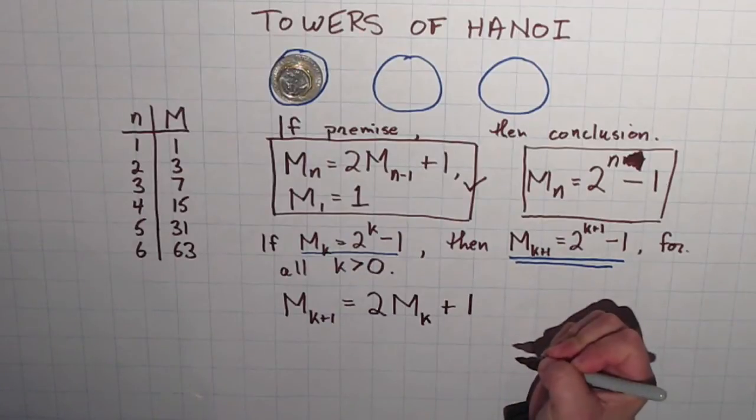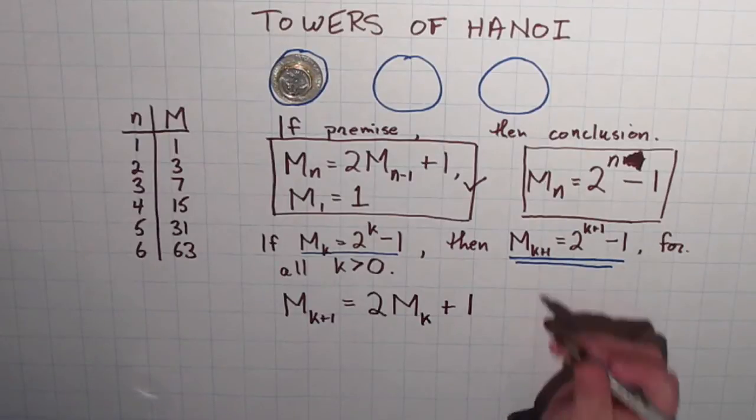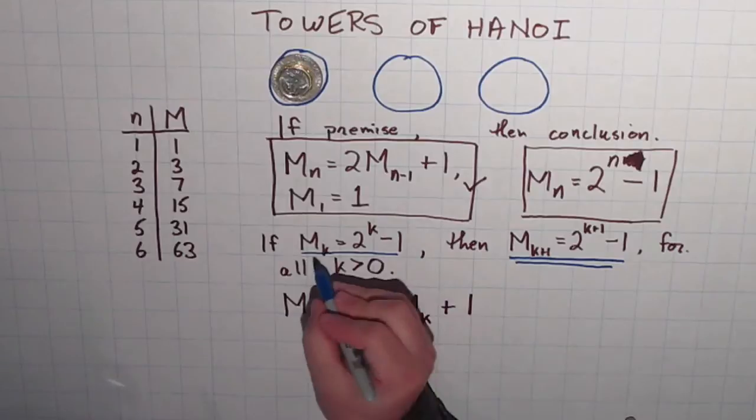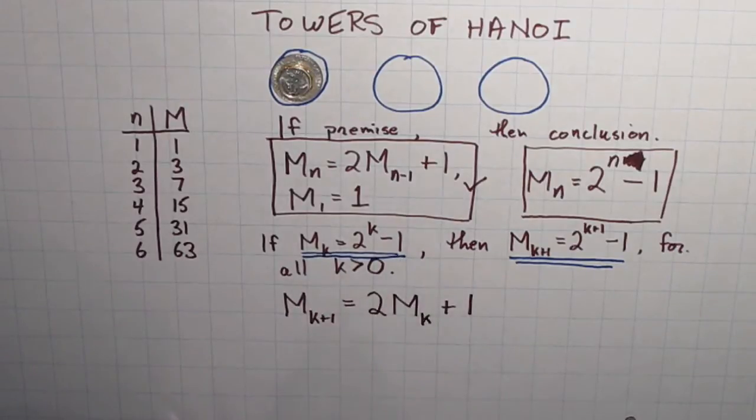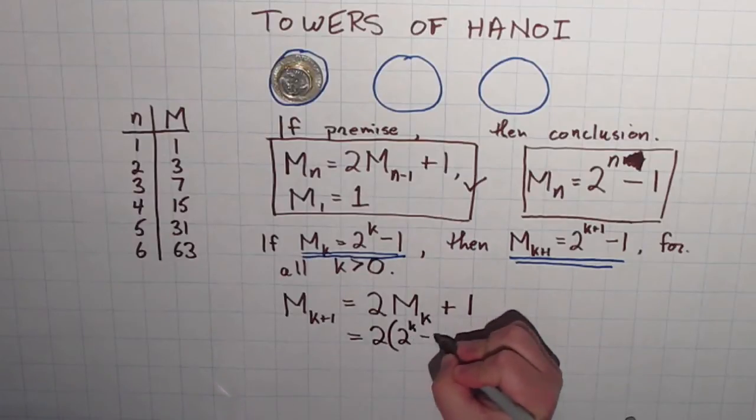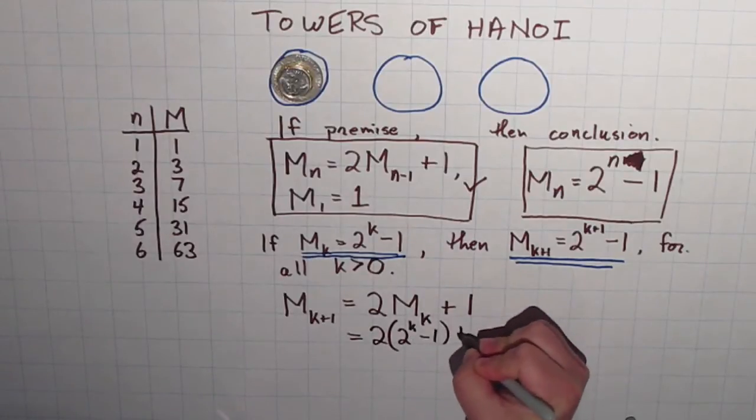So, I got this statement. M_(k+1) is equal to 2M_k plus 1. And then I have my premise here. Underline it once again. This guy, that's my premise. And I got an M_k is also equal to 2 to the k minus 1. So, I'm going to replace the M_k with a 2 to the k minus 1 plus a 1.